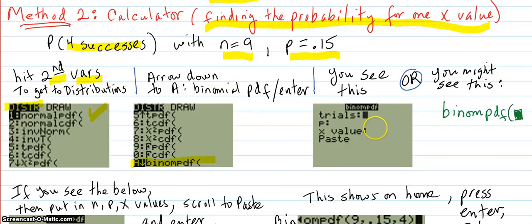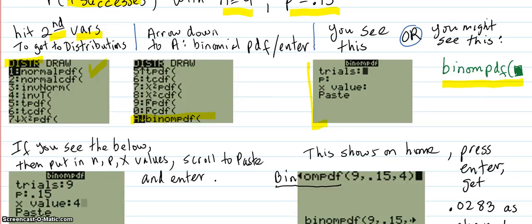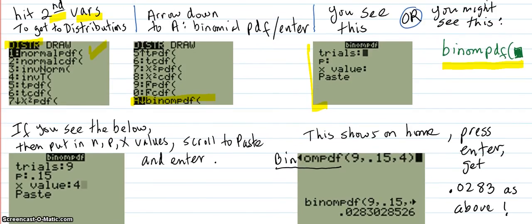Now, if you have a newer type of TI-84 or a newer calculator, you're probably going to see this menu. But if you have an older one, you're going to see this on the home screen. So either one works. So you'll see one of these two. So what do you fill in there? You put in the N, and that's nine. You put in the P, which is .15, and the x value you're looking for, which is four.